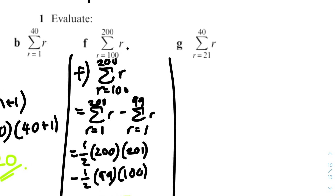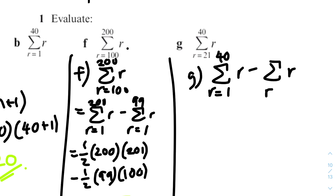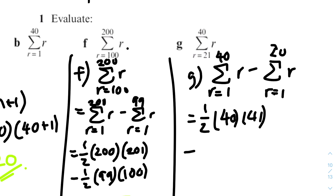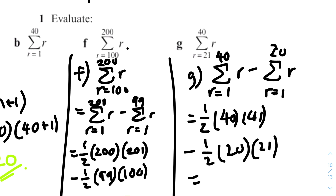For the last part, it's similar — we have to split into two different sums. It'll be the sum from r equals one to 40 minus the sum from r equals one to 20. So we substitute: half times 40 times 41, minus half times 20 times 21, and that gets us 610.